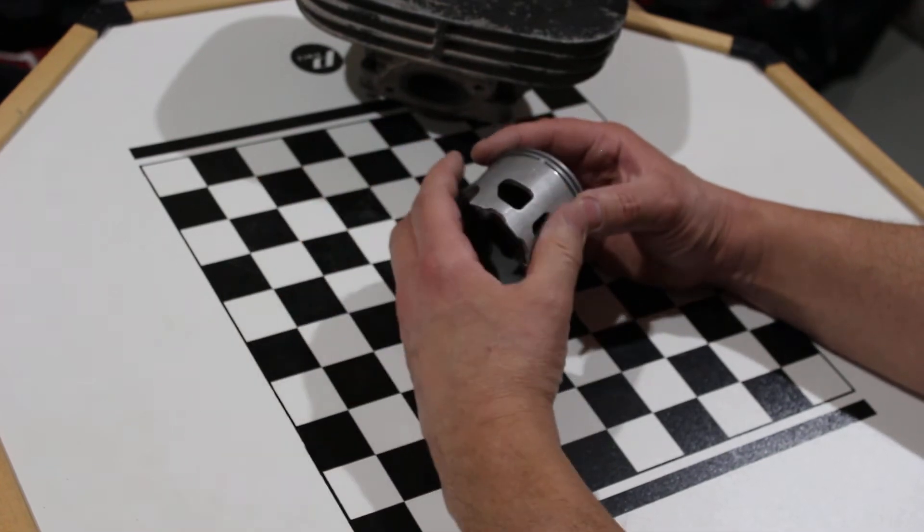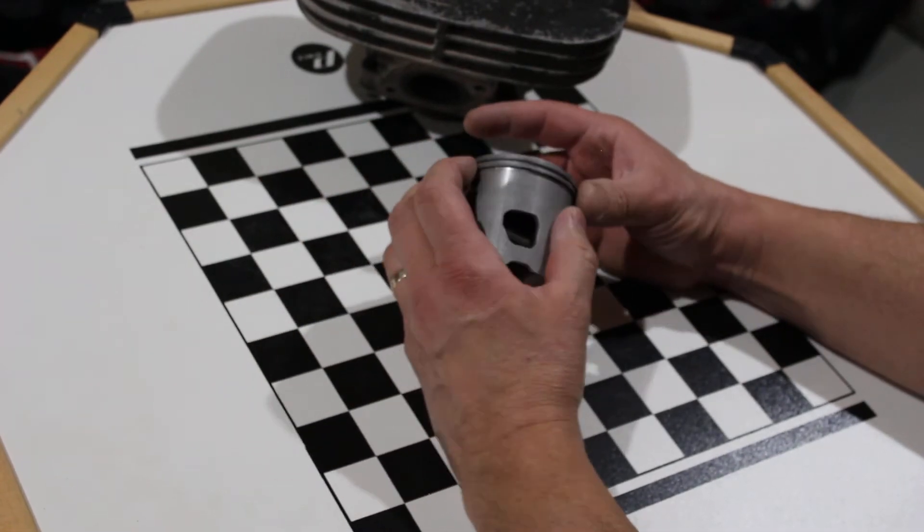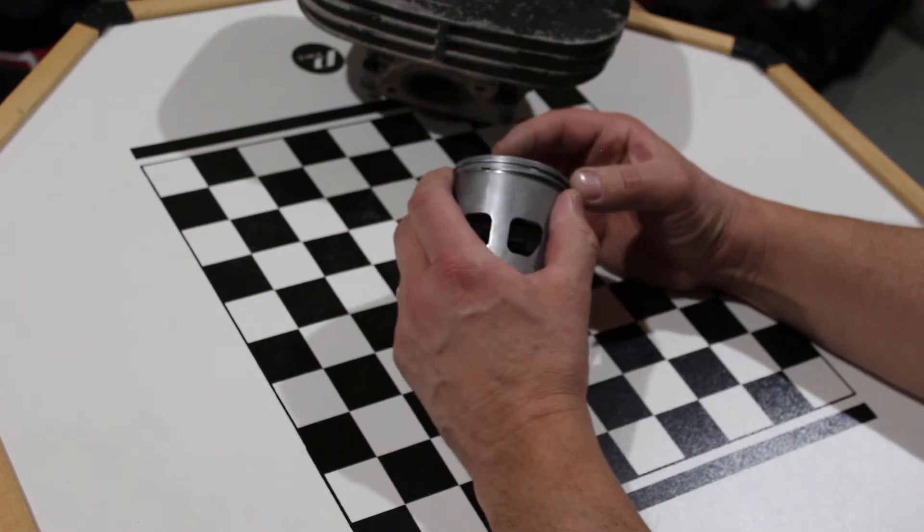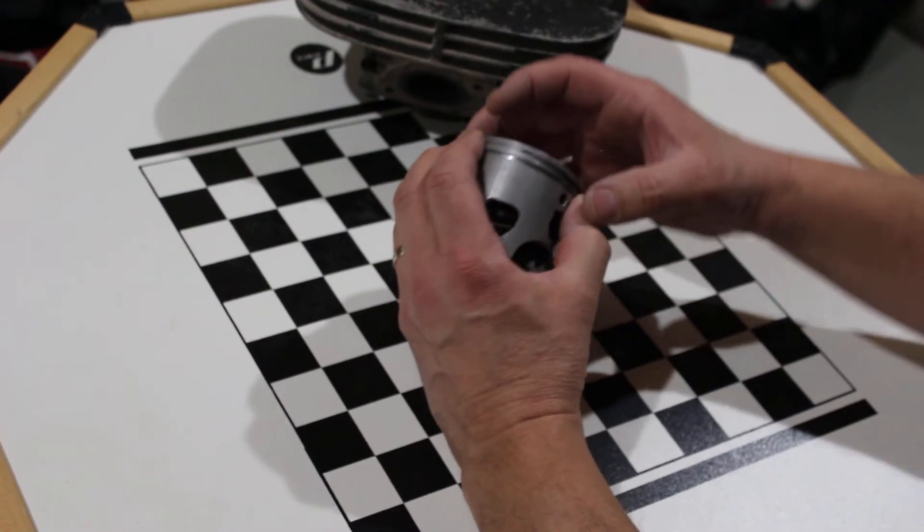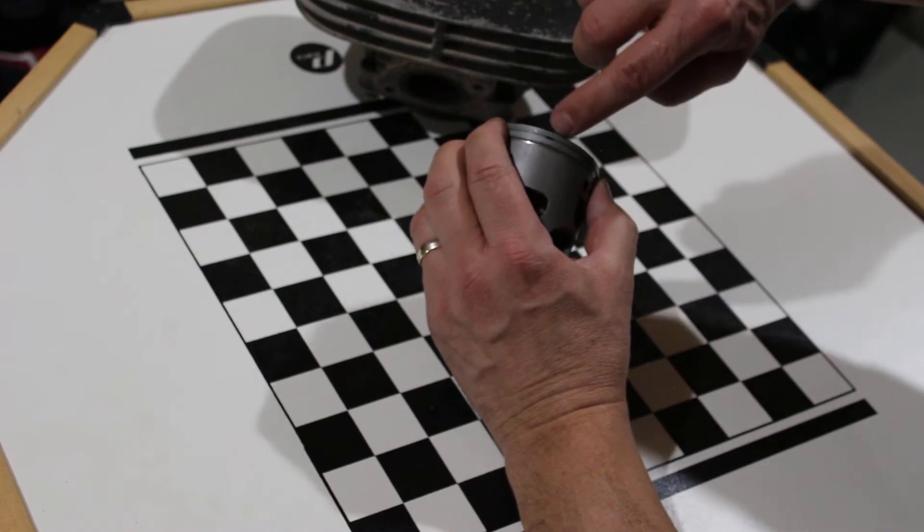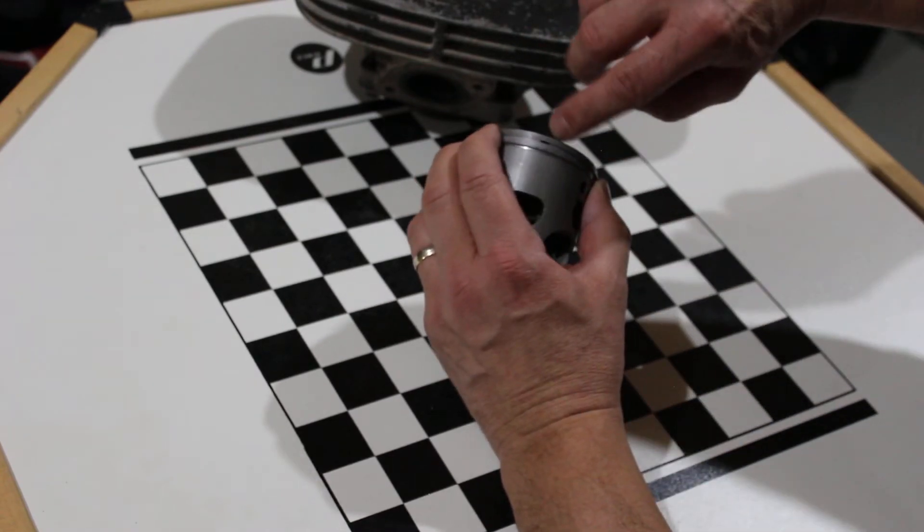Minor trivia for any of you that work with two-stroke at all: if you look really closely here where the ring gap is, I'm going to pop this ring out real quick.